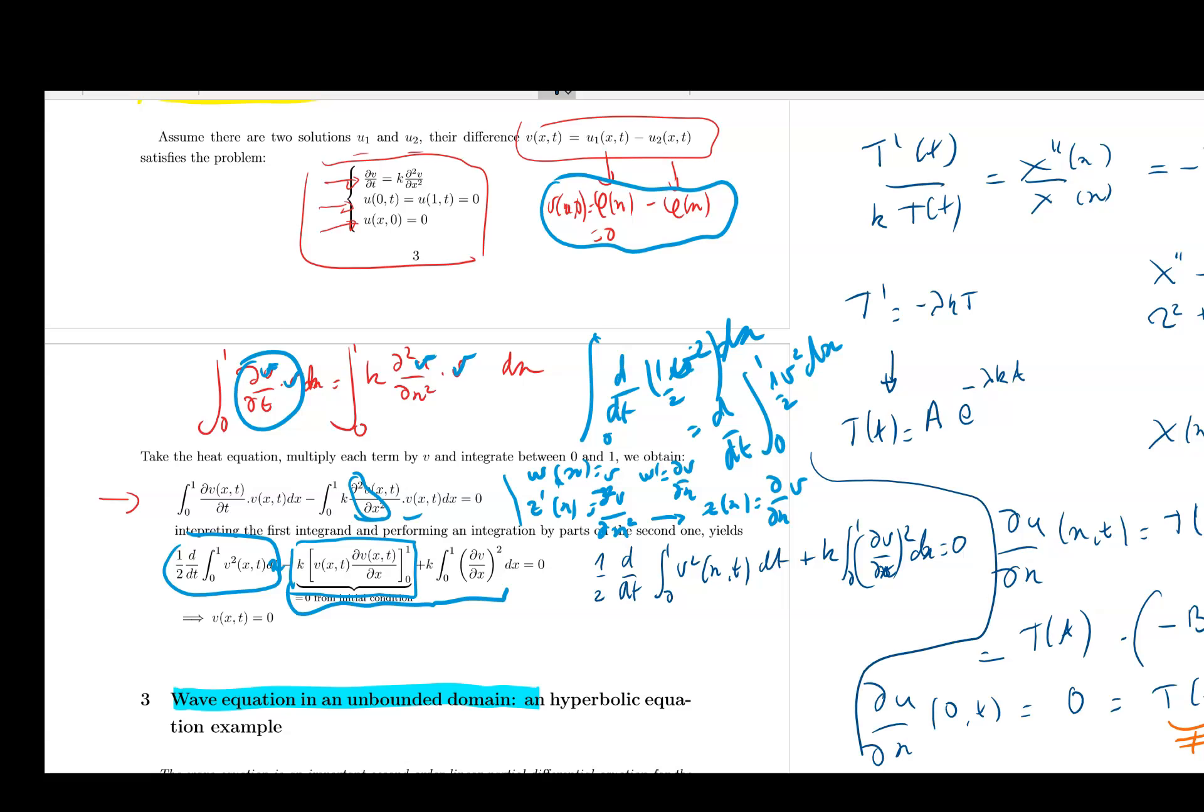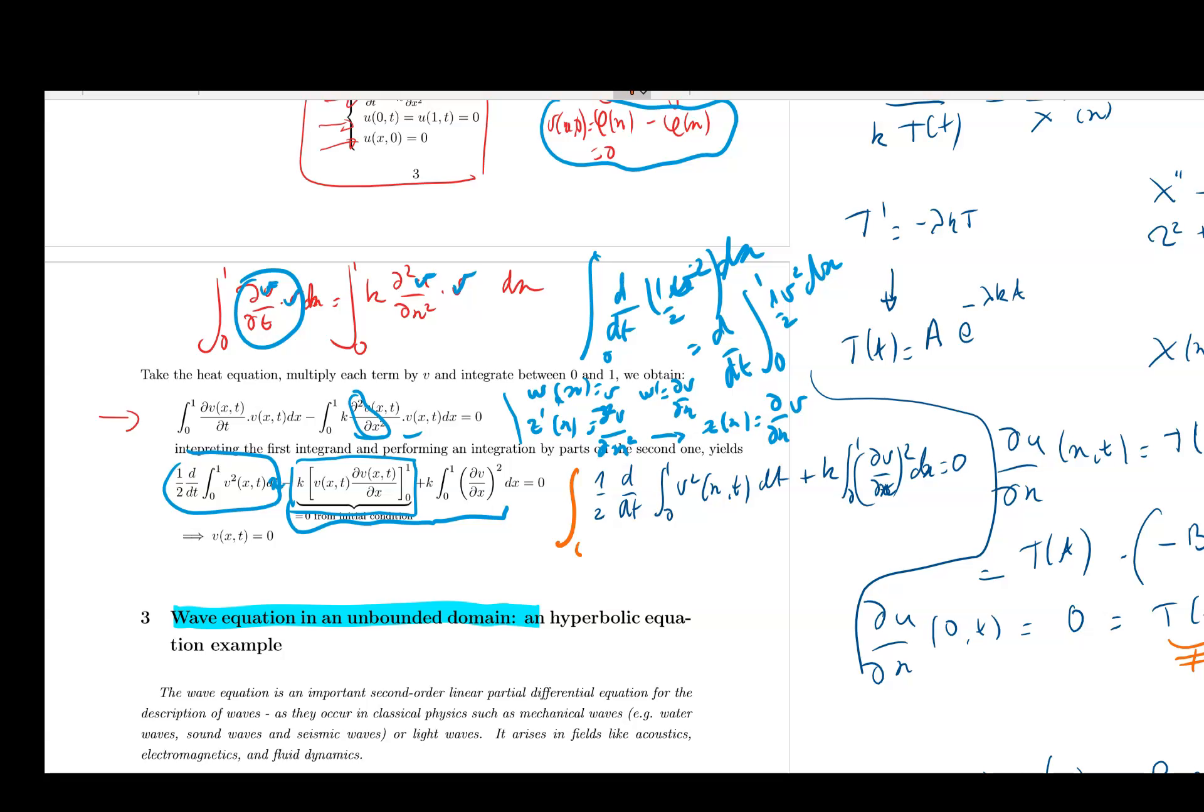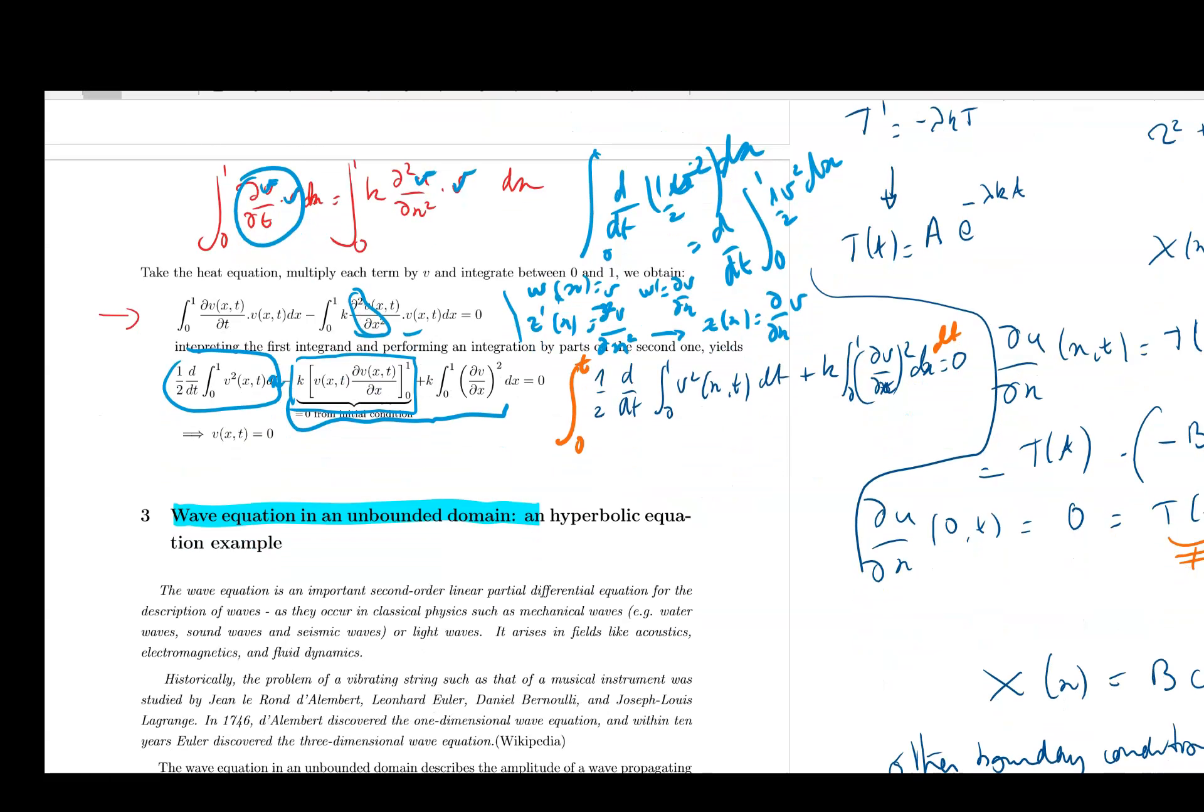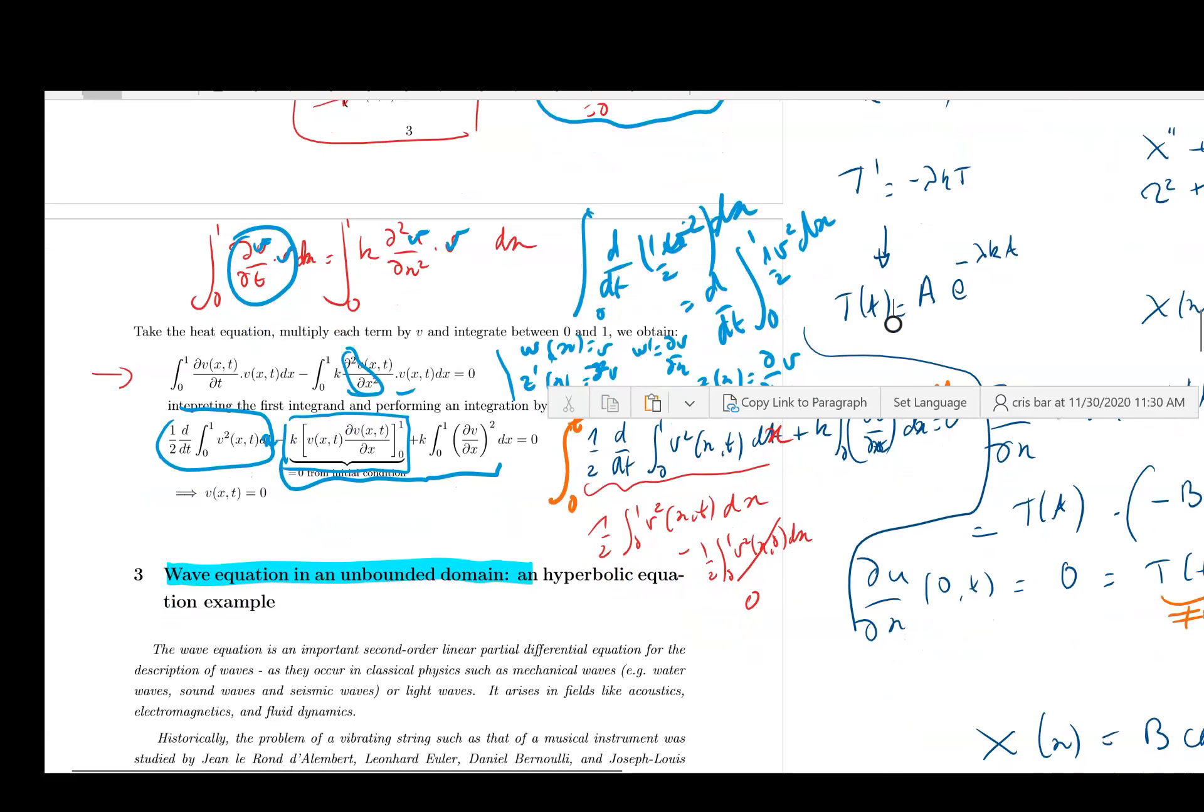So let's now integrate with respect to, integrate between zero and T, DT, that whole step. First part, of course, is just going to give you that one when I integrate. So now when I integrate this thing with respect to T, I'm going to get one over two integral between zero and one v² of (x,T) dx minus one over two integral between zero and one v² of (x,0) dx. But this we said is equal to zero because this is the initial condition that I give to v.